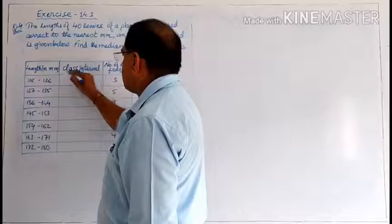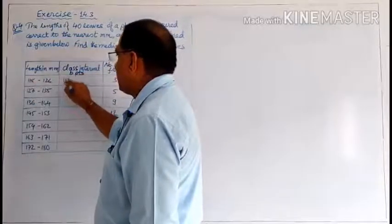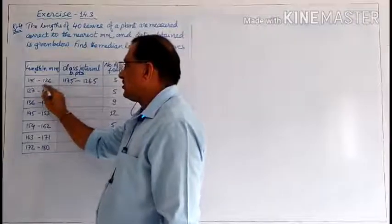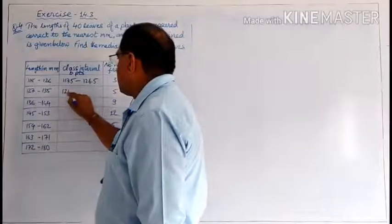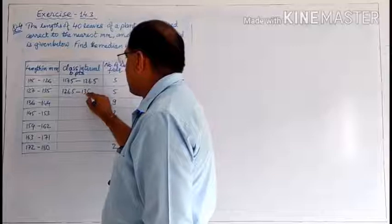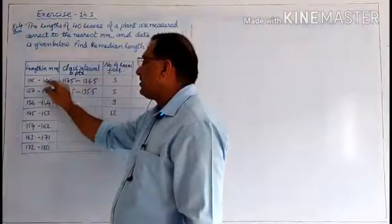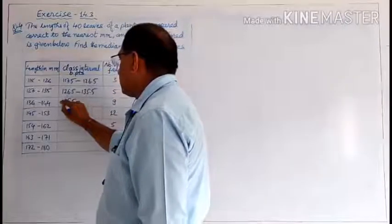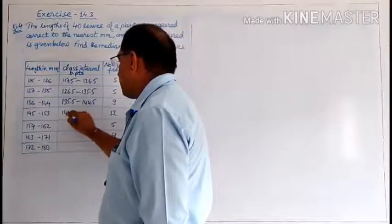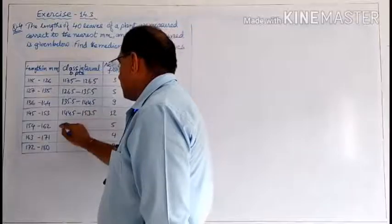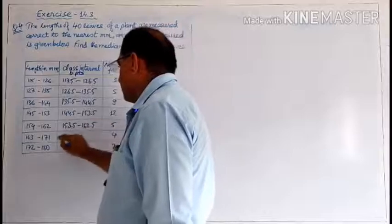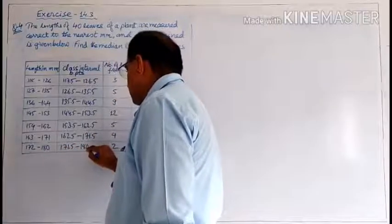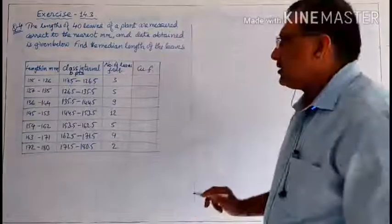To find the lower limit we need continuous frequency distribution with boundary points. So here 118 minus 0.5 = 117.5, and the upper boundary is 126 plus 127 divided by 2 = 126.5. The class width is 9. Similarly we get: 117.5–126.5, 126.5–135.5, 135.5–144.5, 144.5–153.5.